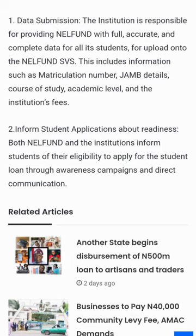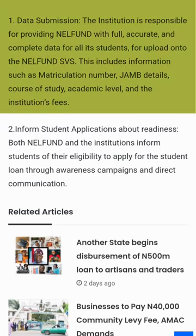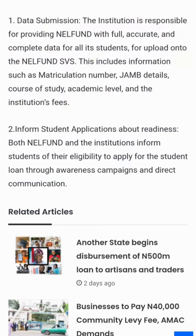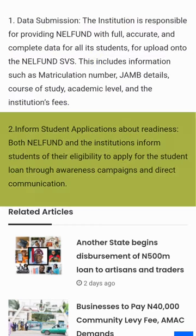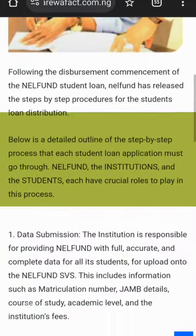The student has to make sure that all the information given to the school is cross-checked. Go to the HOD or the admin block — anywhere — just cross-check it. Make sure your NIN is correct. After that, the second procedure is filling the form correctly. The link will be in the description below.